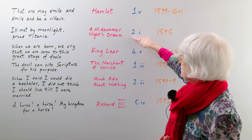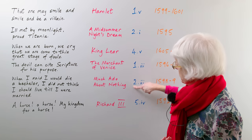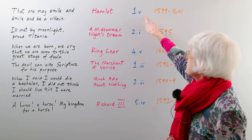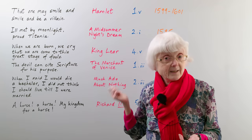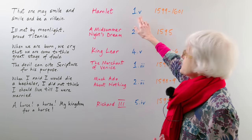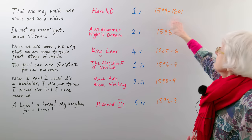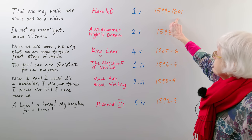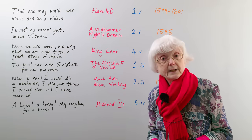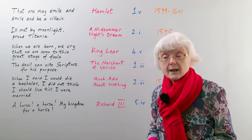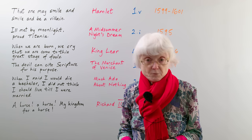I've used normal numbers for the act numbers but Roman numerals for the scene numbers — there are different ways of doing this but that's my own choice. Hamlet was written between 1599 and 1601, in the Elizabethan period when Queen Elizabeth the First was on the throne.